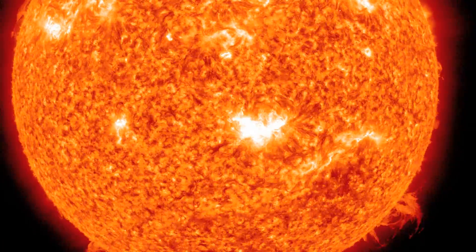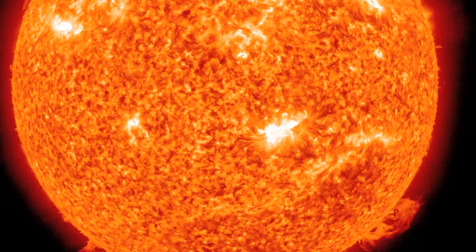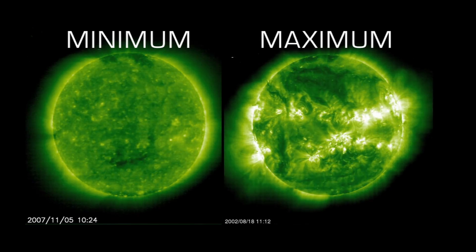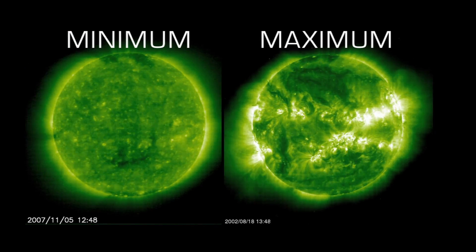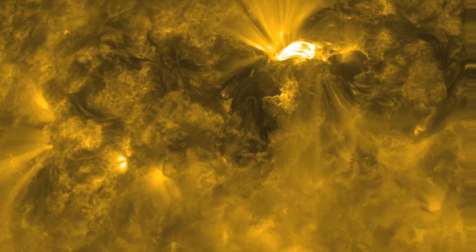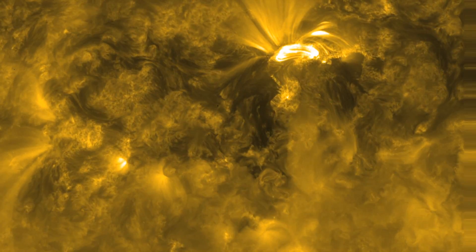Solar flares may seem like faraway events, but they can damage satellites and even ground-based technologies and power grids. Every 11 years, as the sun reaches its maximum activity, they become bigger and more common, and that increases the chances that one will significantly affect Earth.